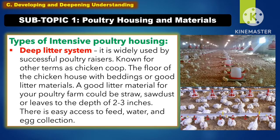The following are the types of intensive poultry housing. The first one is the deep litter system. It is widely used by successful poultry raisers, also known as chicken coop. The floor of the chicken house is covered with bedding or good litter materials such as straw, sawdust, or leaves to a depth of 2 to 3 inches. There is easy access to feed, water, and egg collection.